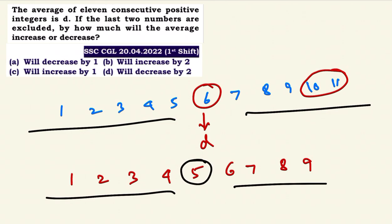If the average of the 9 remaining numbers is considered, and D was the middle of 11, the new average shifts. The middle number of the remaining 9 is 5th position. So the average decreases by 1.